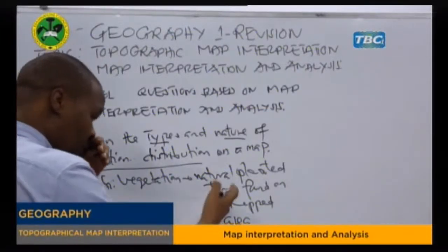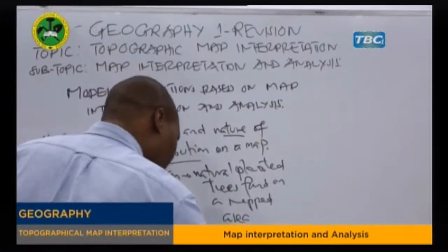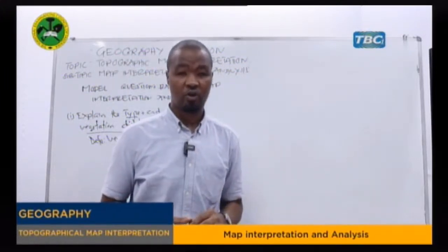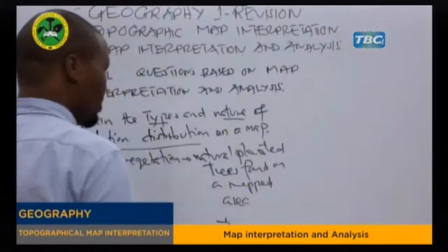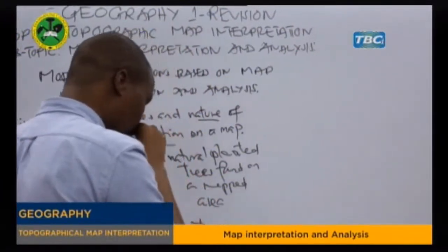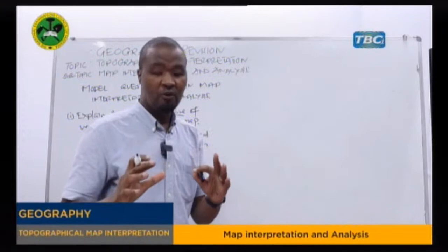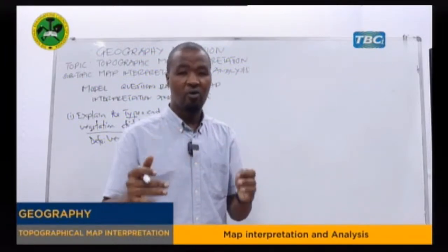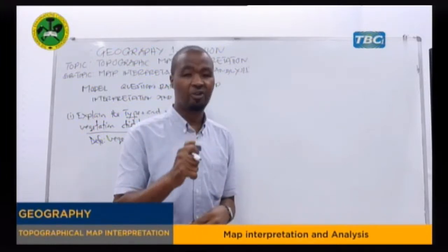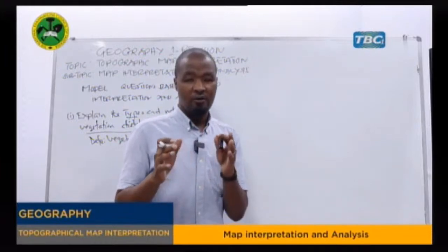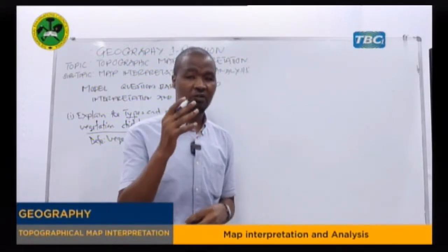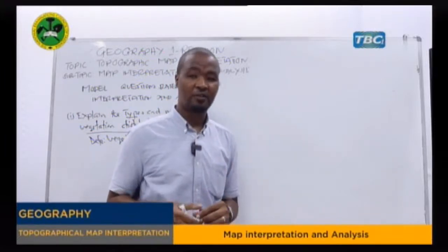We have a lot of natural planted trees found in a map area — we have the woodland, the scrub, scattered trees, forest, etc. These are natural planted trees. But we can also categorize some as artificial vegetation, in the case of forest reserves. If you find a forest and manage it for a particular goal or plan, we call it an artificial forest reserve. So vegetation found on a map is divided into natural vegetation and artificial vegetation — for example, a forest reserve or a plantation.